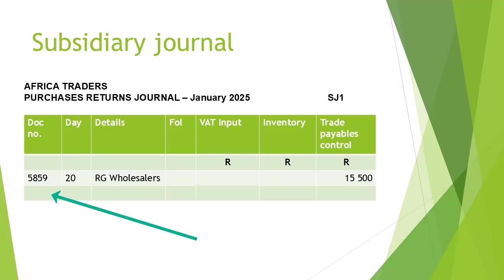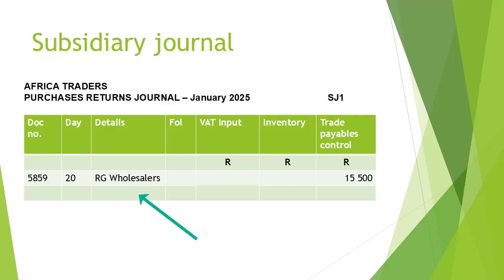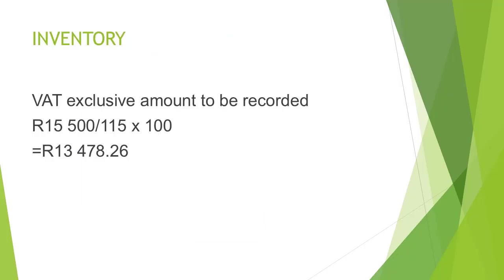In the document column, we enter the credit note number 5859. The date of the transaction in the day column is entered as the 20th. The supplier's details in the details column is RG Wholesalers, since the inventory was returned to them. And in the Trade Payables Control column, the amount of 15,500.